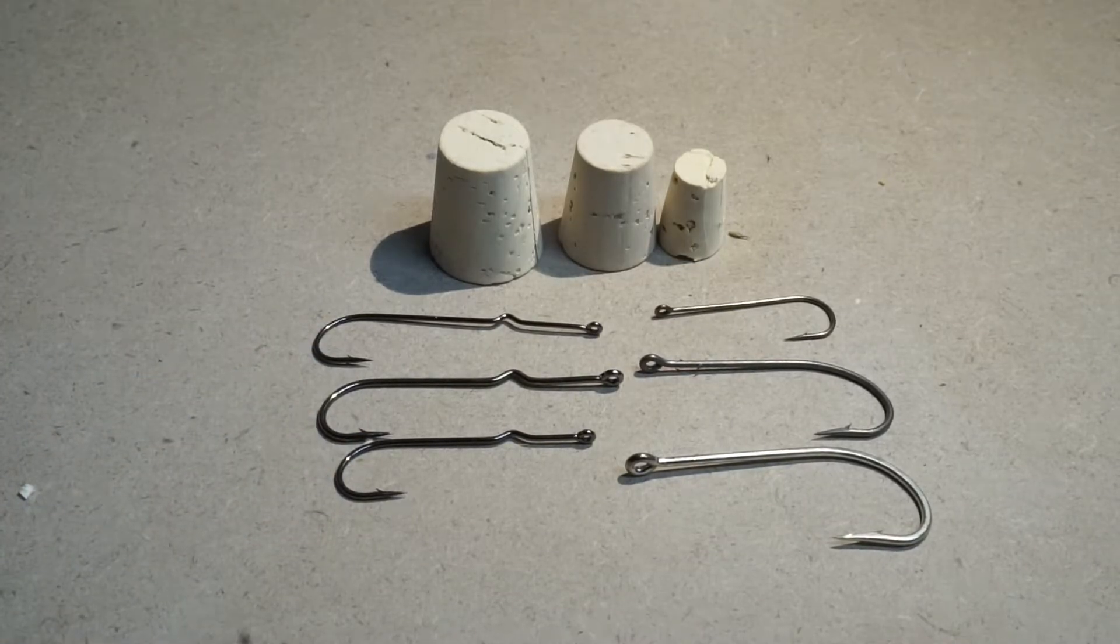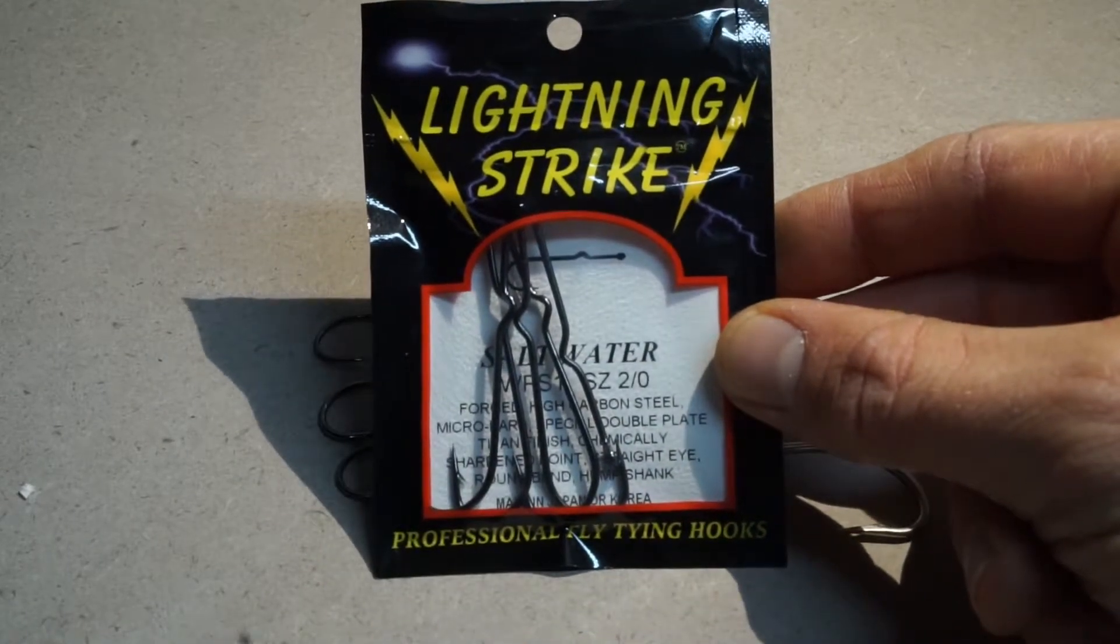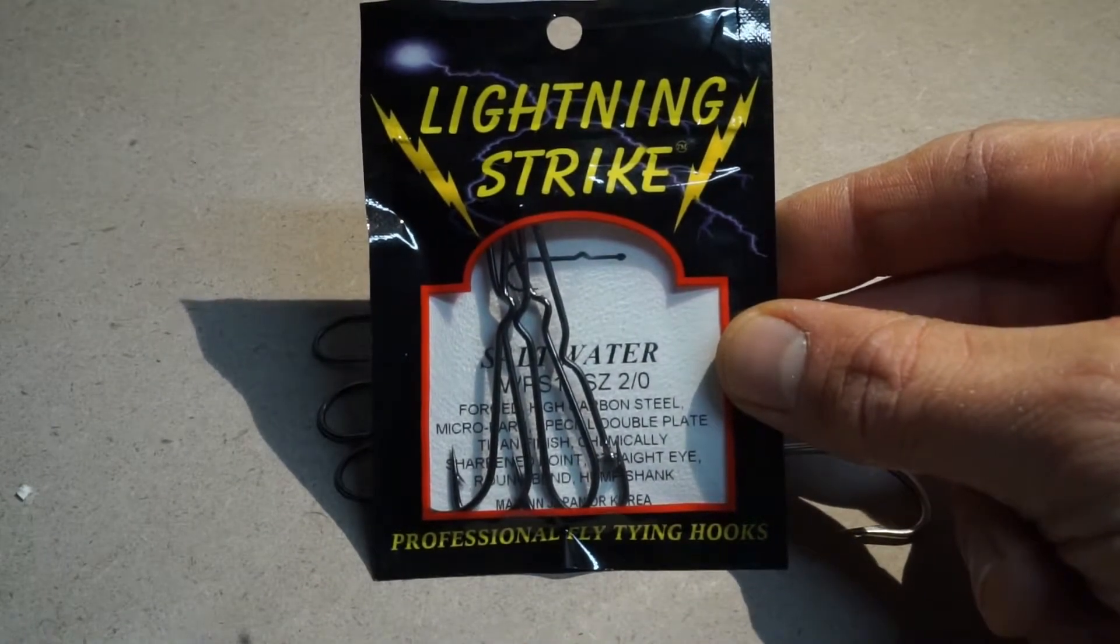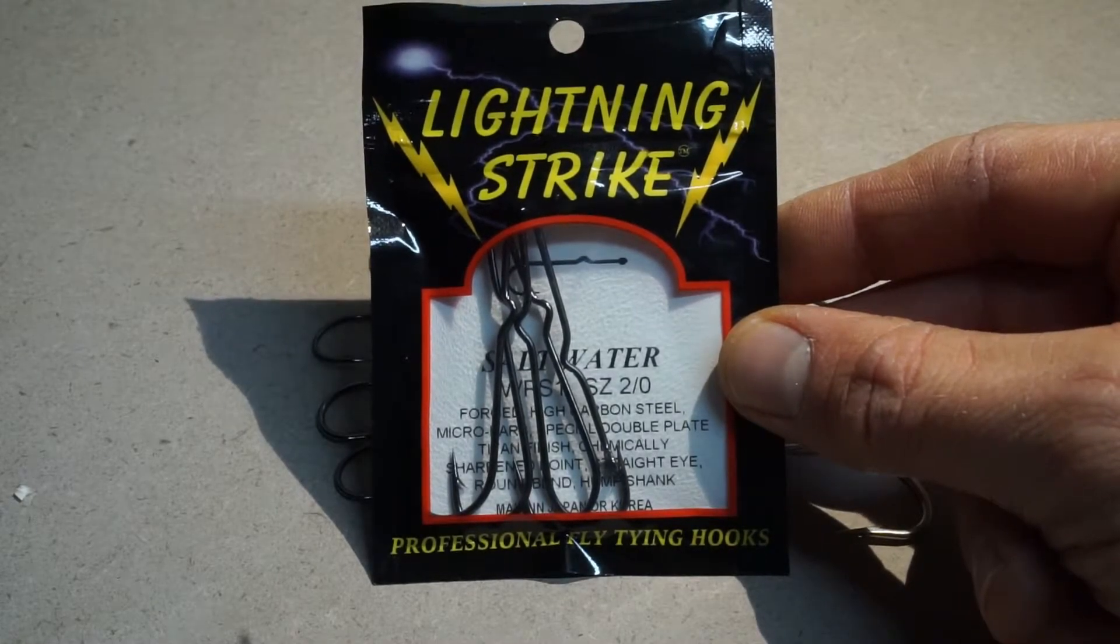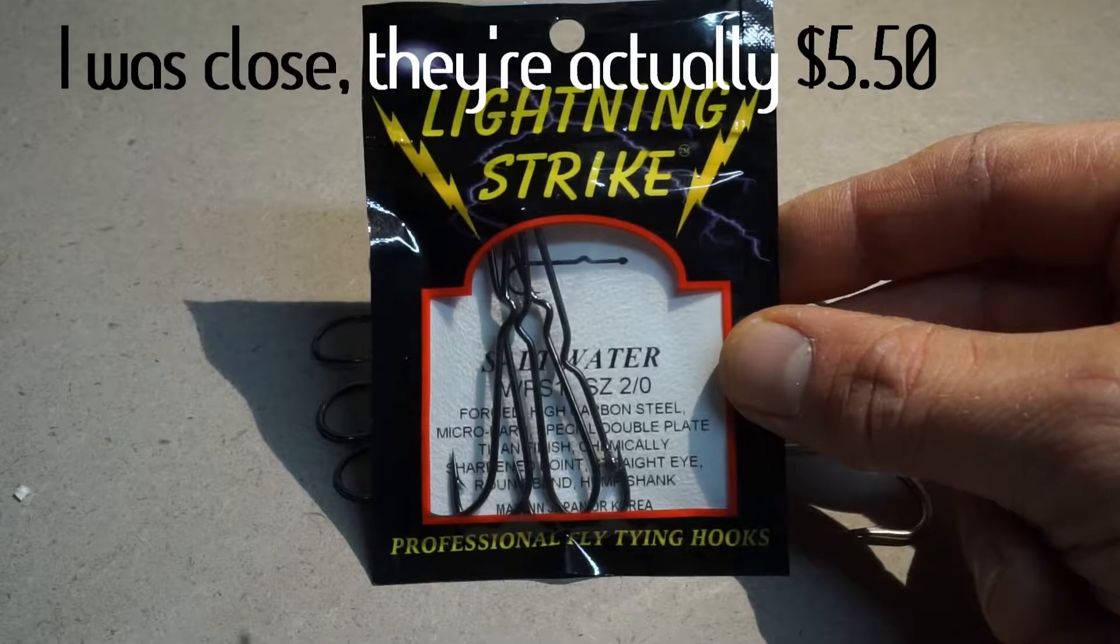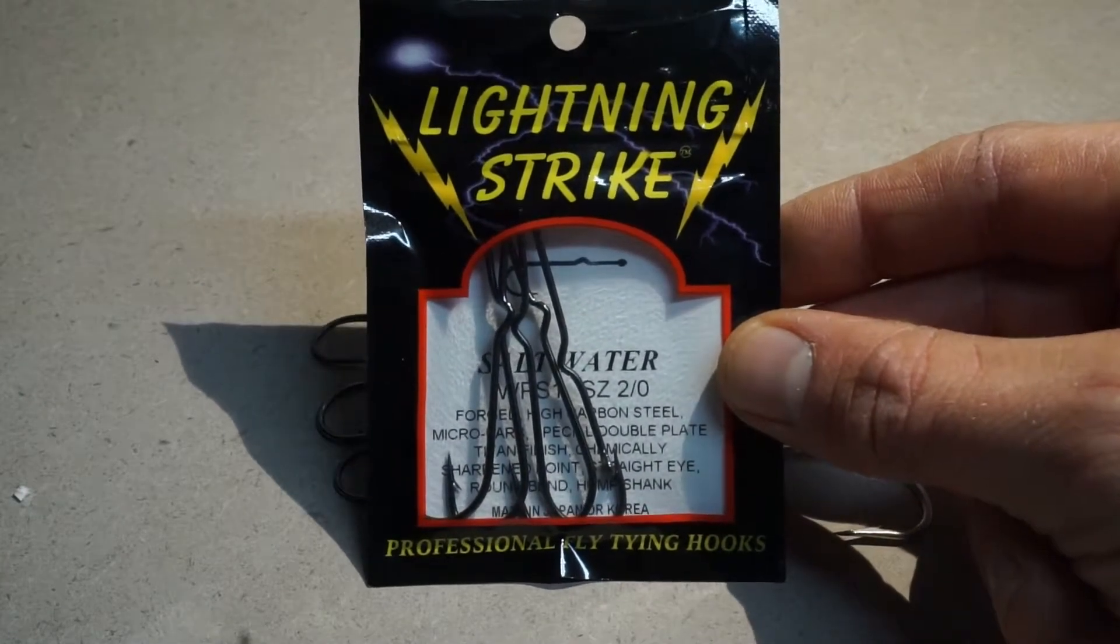That being said, if you do want to buy them, the cheapest option for these particular kind of popper hooks with the bend in them that doesn't allow them to spin are these Lightning Strike ones from Bass Pro. They're definitely the cheapest ones I've found. I think they're six bucks for a package of ten. And that is as cheap as you're going to get.